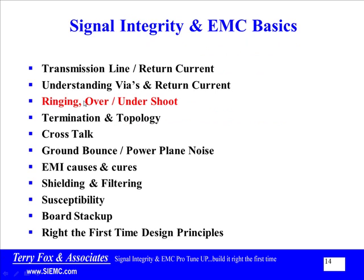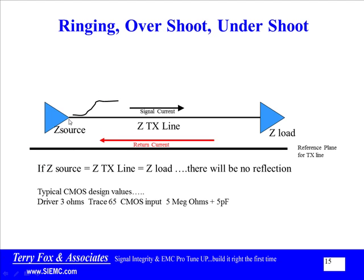Okay, this is ringing, overshoot, undershoot. If I was to have a headline statement here, it would be that ringing is the root of all evil. In high-speed digital systems, it's that reflection between source and load that causes the problem. Now, if I had the impedance of the source and the impedance of the load and the impedance of the transmission line matched, there would be no reflection.